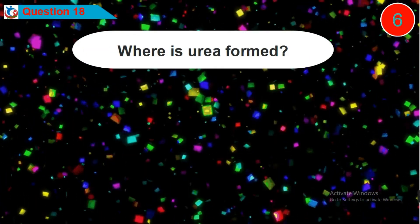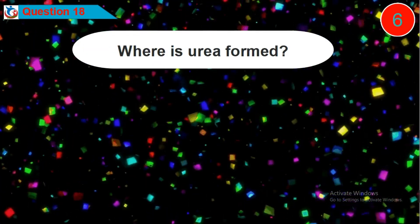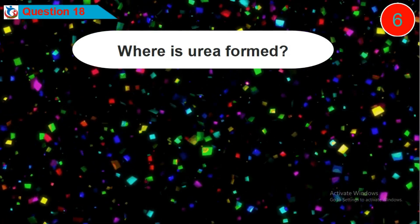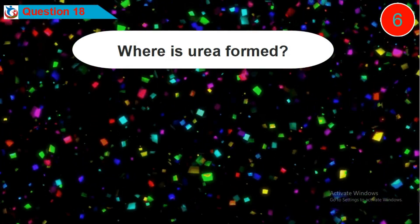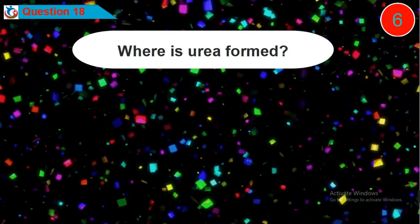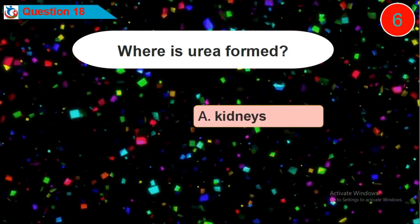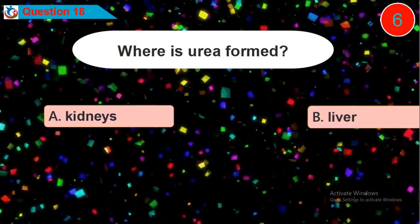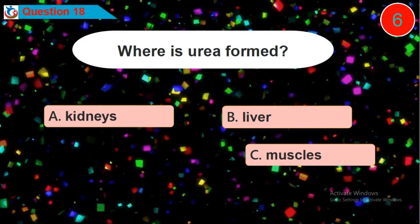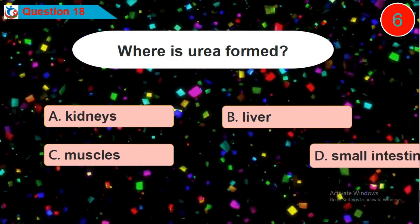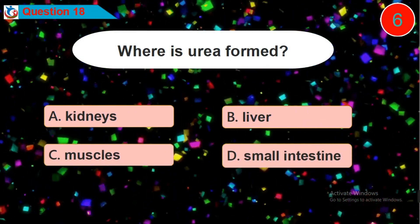Question 18: Which diet will cause the liver to produce the most urea? Is it option A, B, C, or D?